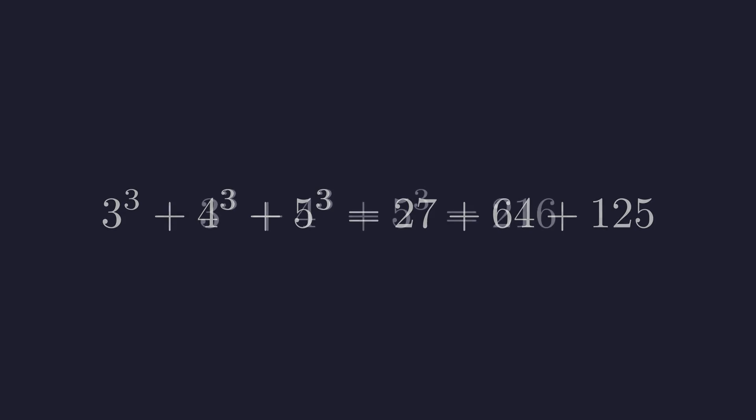So let's dive into this sum of cubes. What we're about to discover is genuinely surprising. Let's compute this step by step. 3 cubed is 27, 4 cubed is 64, 5 cubed is 125. So when we add these up, 27 plus 64 plus 125, we get 216.